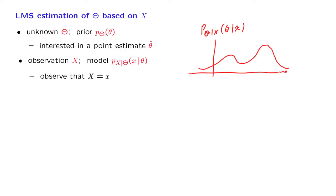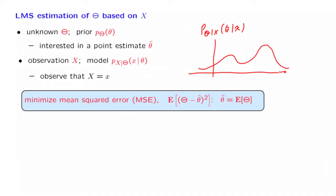How do we do it? Remember our earlier conclusion: if we do not have any observations, if we live in a universe where we have a distribution of theta and we want a point estimate, the optimal one — the one that minimizes the mean squared error — is the expected value of the random variable. But now we live in a different universe, a universe where we have a conditional distribution of theta.